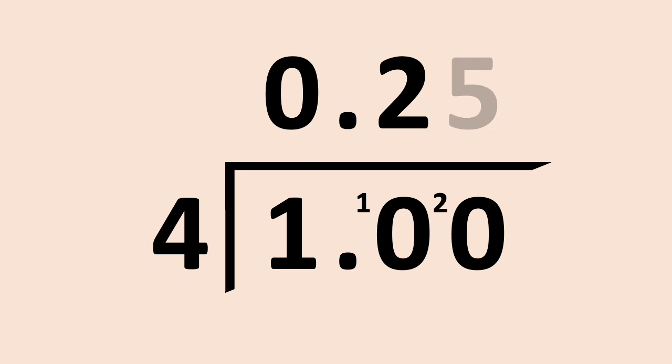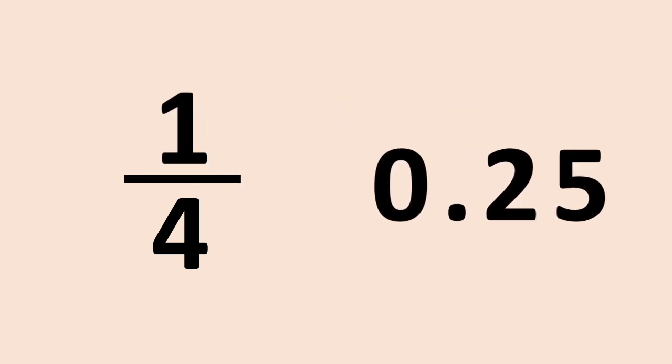How many fours go into twenty? Five. And there we have it. One quarter is equal to 0.25.